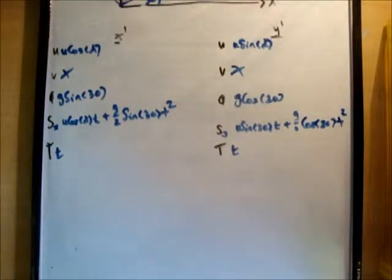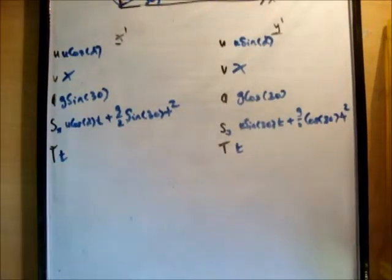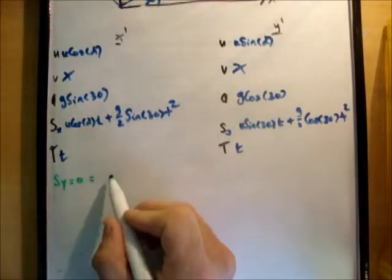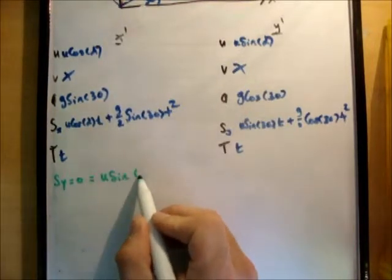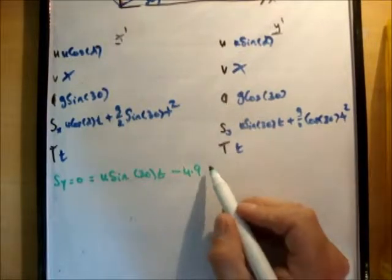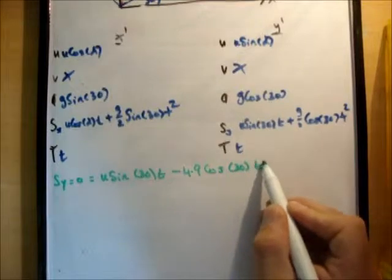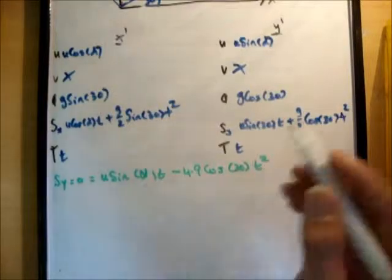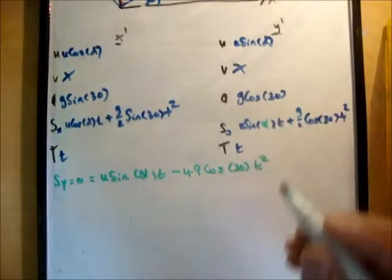Now when is the particle at its maximum range? It's when it's after hitting the ground again. So s sub y, the distance above the x prime axis in this case, is equal to 0. So let's just do that. So we'll say that s sub y is equal to 0 is equal to u sine of alpha t minus 4.9 which is g over 2 cos of 30 t squared. That's sine of alpha, not 30.